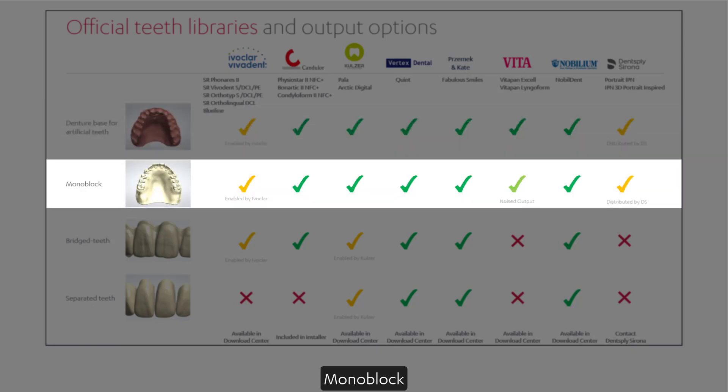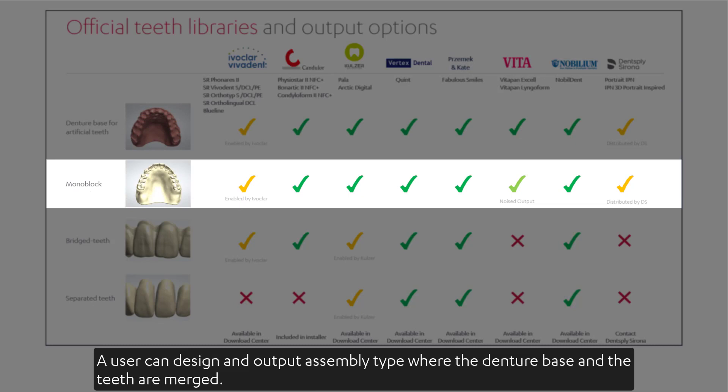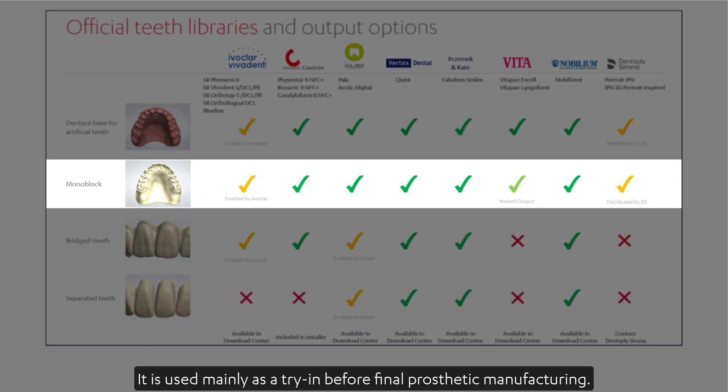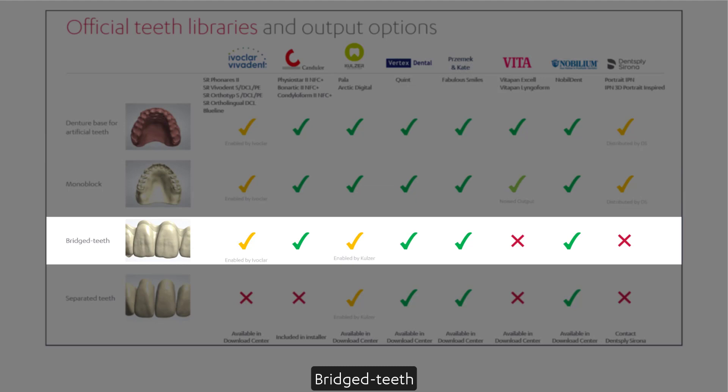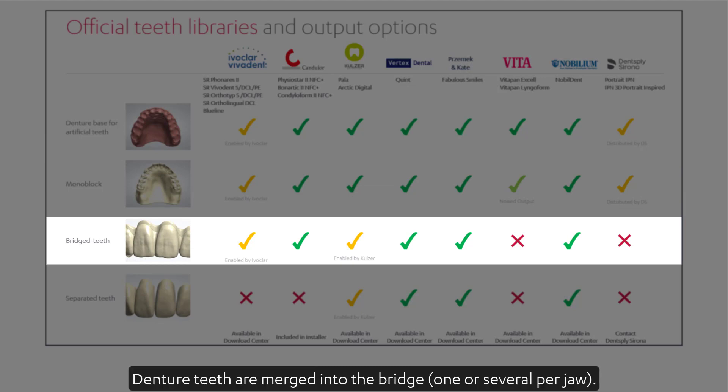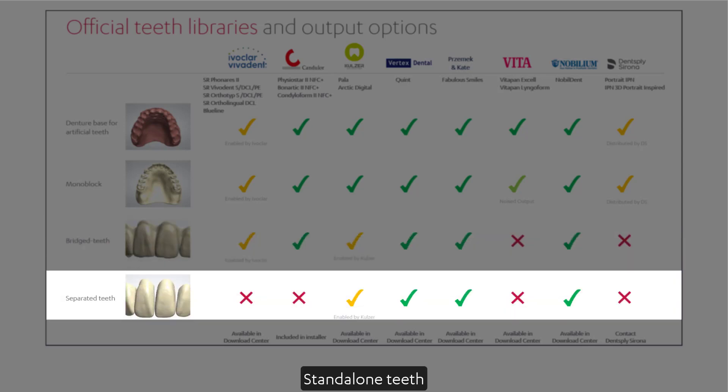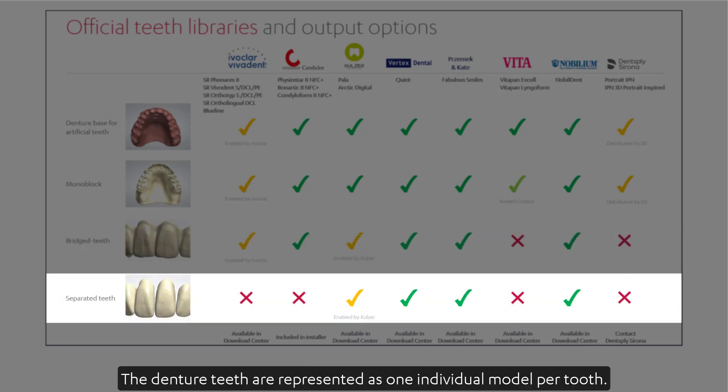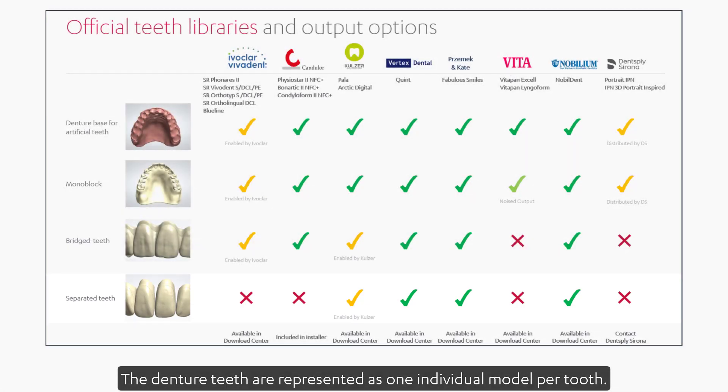Monoblock: a user can design and output an assembly type where the denture base and the teeth are merged. It is used mainly as a try-in before final prosthetic manufacturing. Bridge teeth: denture teeth are merged into the bridge, one or several per jaw. Standalone teeth: the denture teeth are represented as one individual model per tooth.